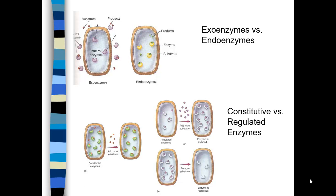If an enzyme is on all the time and present in abundance even if you add more substrate, we call it constitutive. A constitutive enzyme is on all the time and available in relative abundance at all times. Regulated enzymes: you will have fewer enzymes if there is not much substrate, but if you add more substrate, the enzymes will also be produced at a high level. If you remove the substrate, then the enzyme is repressed. More substrate means more enzyme; less substrate means the enzyme is repressed and you have less enzyme.